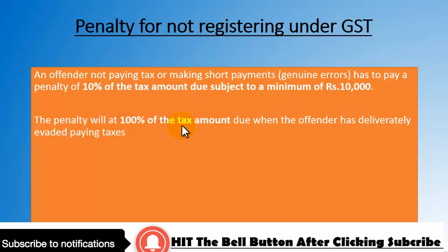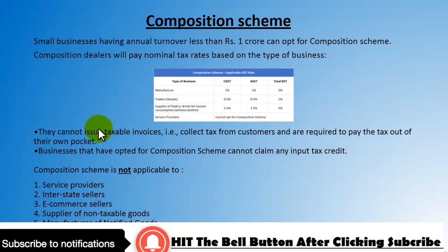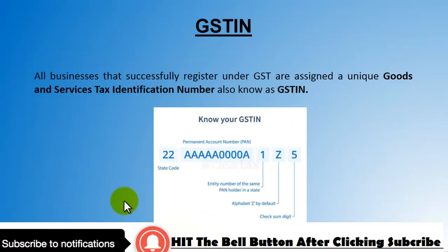The penalty rises to 100% of the tax amount due when the offender has deliberately evaded paying tax. For the composition scheme — small businesses with annual turnover less than 1 crore can opt in. Composition dealers pay nominal tax rates: for manufacturers 1% CGST + 1% SGST = 2% total GST. Composition scheme is not applicable to service providers, interstate sellers, e-commerce sellers, suppliers of non-taxable goods, or manufacturers of notified goods.